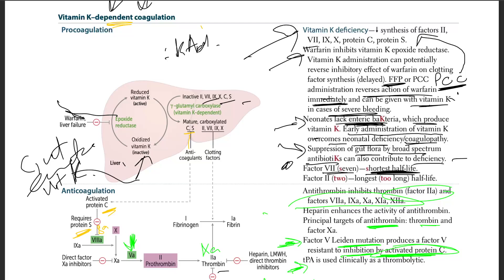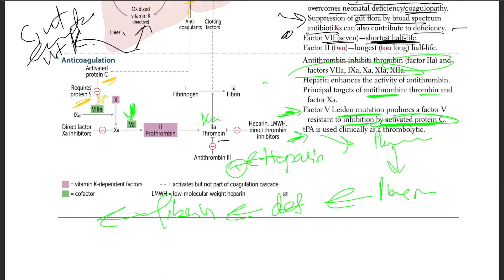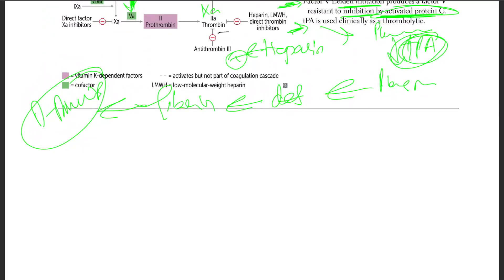TPA is used clinically as a thrombolytic. It converts plasminogen to plasmin, and plasmin destroys the fibrin. All you will have left are D-dimers. That's TPA, and that's all for the physiology for hematology.